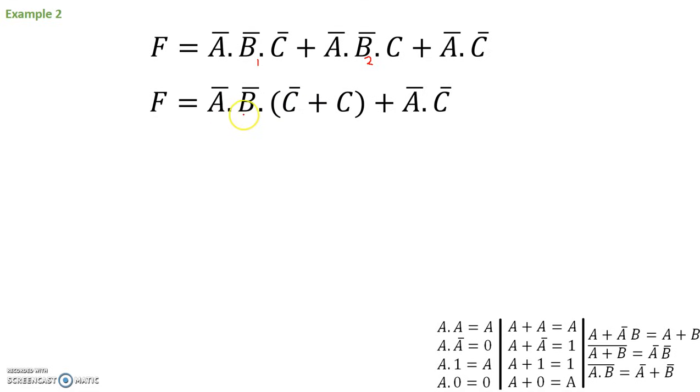In our second example, we have F is NOT A ended with NOT B ended with NOT C or NOT A, NOT B, C or NOT A, NOT C. What should we do first? It's fairly obvious that the first and the second term have a lot of things in common. First and the second term both have NOT A, NOT B. Let's bring NOT A, NOT B out. What we end up with is NOT A, NOT B ended with NOT C from here and C from there or with NOT A ended with NOT C. We'll just leave this term as is.